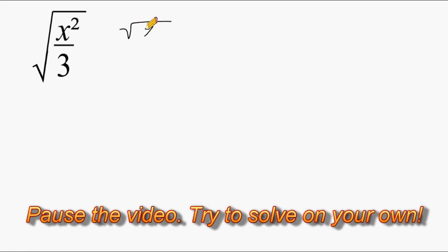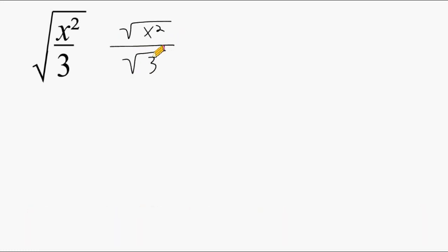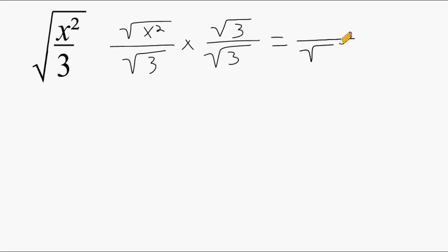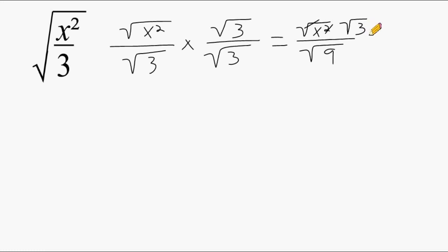Let's do another example. I'm going to rewrite this as the square root of x squared over the square root of 3, and multiply by the square root of 3 over the square root of 3, which leaves us with the square root of 9 on the bottom. On the top we have the square root of x squared times the square root of 3. Now x to the second power is a perfect square, and whenever you have something to the second power underneath a square root, the radical and the exponent cancel each other out — so we just have x on top. We can't pull any perfect squares out of 3, so that stays under the radical. Rewriting: x times the square root of 3 on top, and the square root of 9, which is 3, on the bottom.